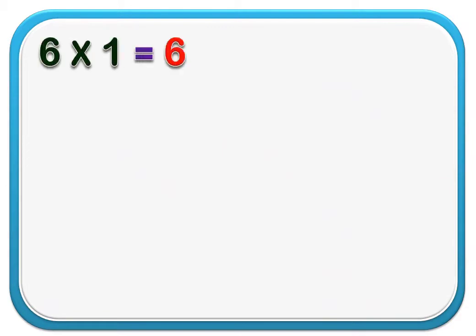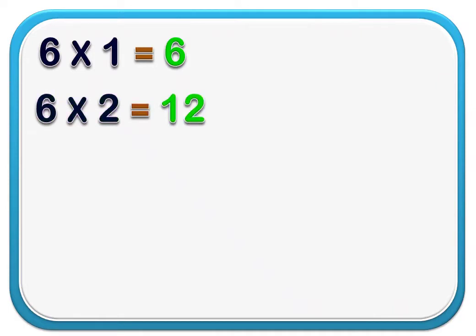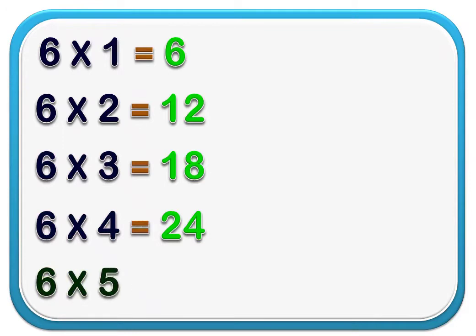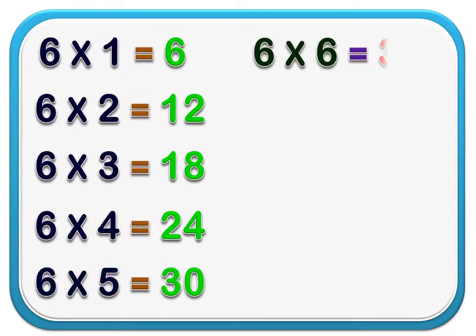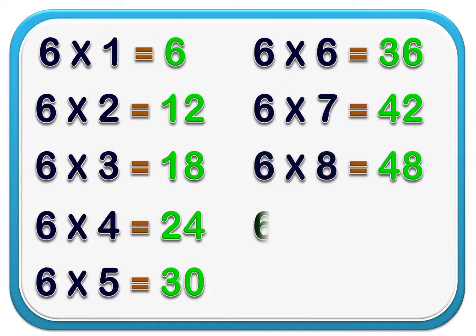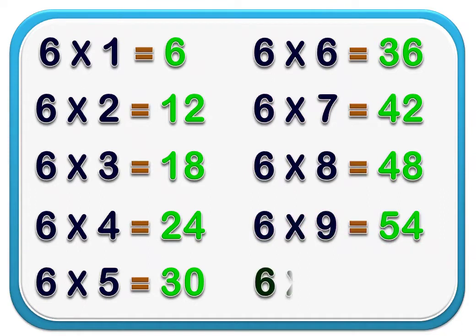6 1's are 6. 6 2's are 12. 6 3's are 18. 6 4's are 24. 6 5's are 30. 6 6's are 36. 6 7's are 42. 6 8's are 48. 6 9's are 54. 6 10's are 60.